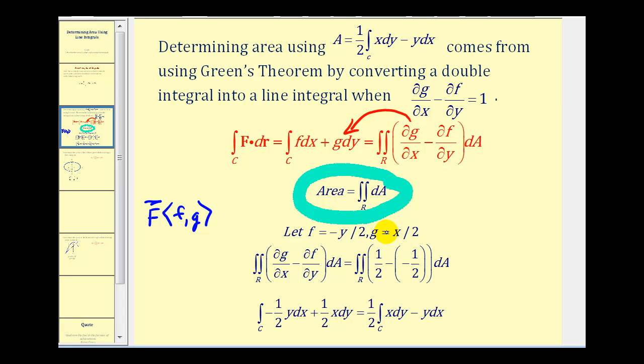So if we use these functions and write the line integral in differential form, f dx would be negative one-half y dx and g dy would be one-half x dy. So now if we factor out the one-half and then put the positive differential first, we'd have x dy minus y dx. And this is the line integral that will give us the area of the region as long as it satisfies the conditions of Green's theorem.